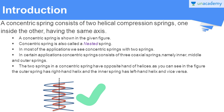In certain applications, concentric springs consist of three coaxial springs — namely inner, middle, and outer springs. The two springs in a concentric spring have opposite hands of helices. As you can see in the figure, the outer spring has a right-hand helix and the inner spring has a left-hand helix, and vice versa.